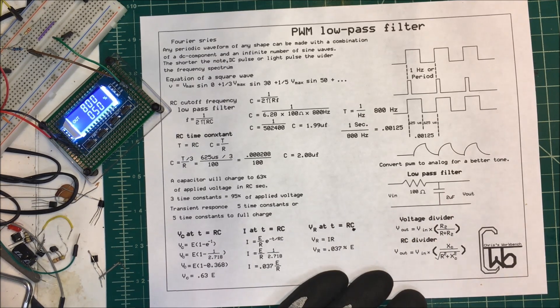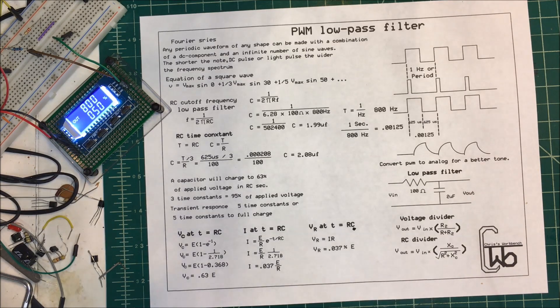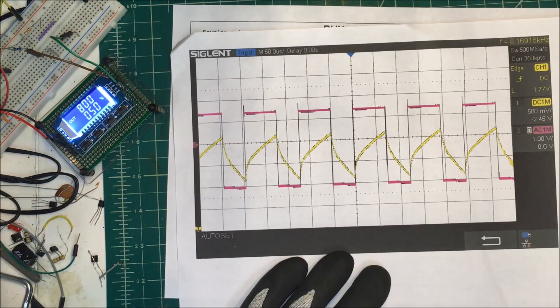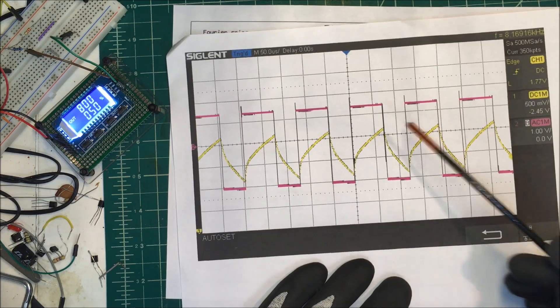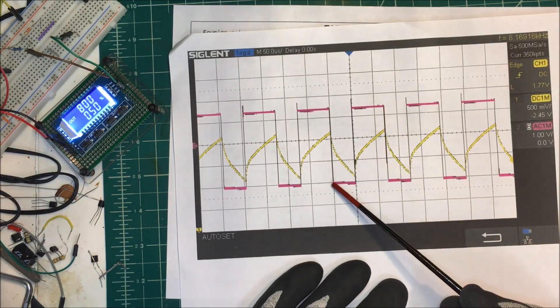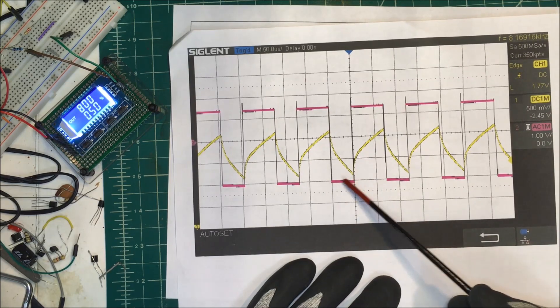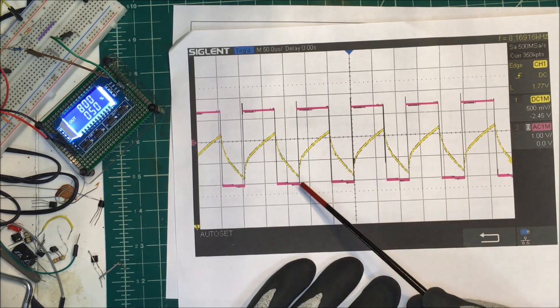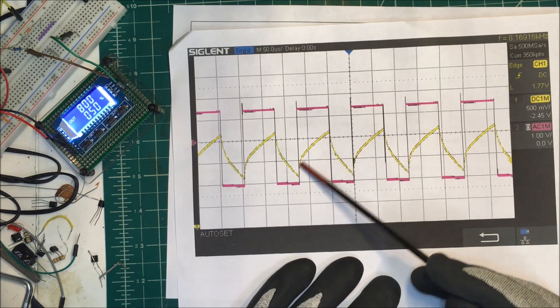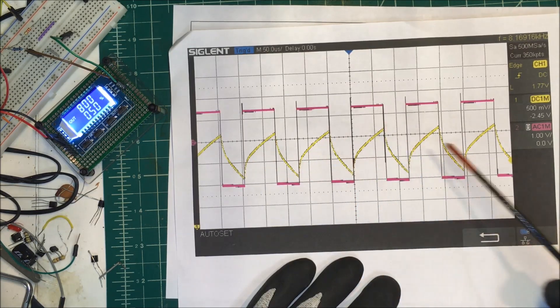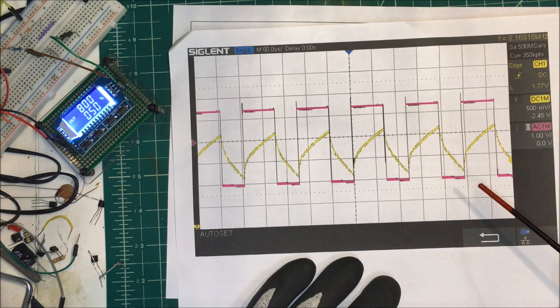I made one. I didn't have a 2 microfarad, I had 2.2. This is what it came out on the scope. This is my square wave. My pulse here wasn't quite the same, but that's fine. And here's my rise time - this is what my signal is going to look like here, closer to a triangle wave maybe.